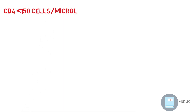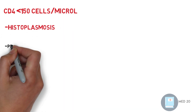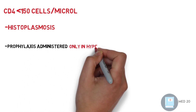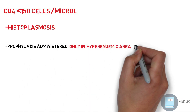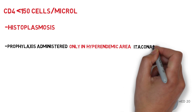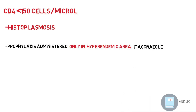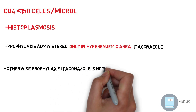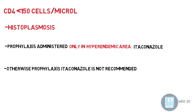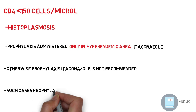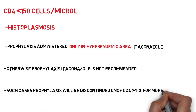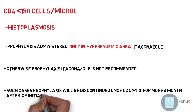CD4 less than 150 — histoplasmosis: Prophylaxis is administered only in hyperendemic areas, usually with itraconazole. Otherwise, prophylaxis is not recommended. In applicable cases, prophylaxis will be discontinued once CD4 is above 150 for more than six months after initiation of ART.